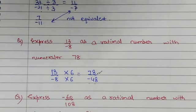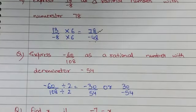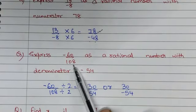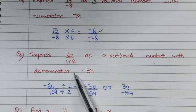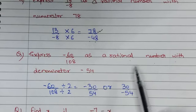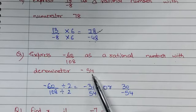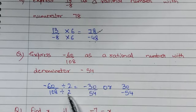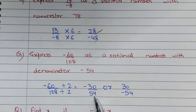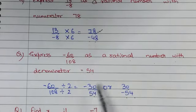Next: express minus 60 upon 108 as a rational number with denominator minus 54. We need to make the denominator 54, so divide by 2. Minus 60 divided by 2 gives minus 30, and 108 divided by 2 gives 54. Since we need the negative sign in the denominator, we write minus 30 upon minus 54.